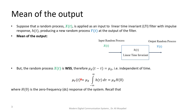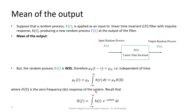The mean of the output will be the mean of the input multiplied by the area under the impulse response, or alternatively, it's the mean of the input multiplied by H at frequency equal to zero. This makes sense because the average is a DC component. Capital H is the Fourier transform of the impulse response, or the transfer function of the system. H(0) is equivalent to the area under the curve of the impulse response.